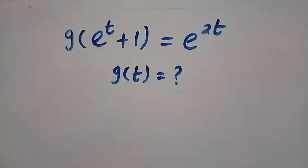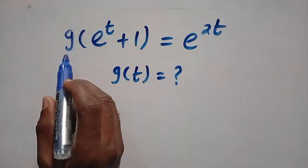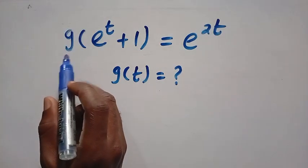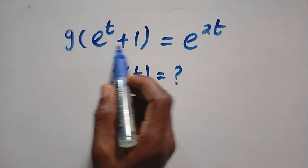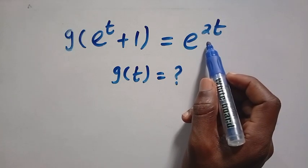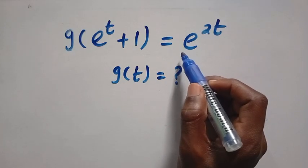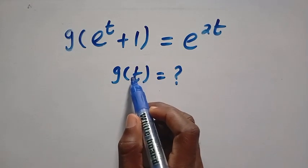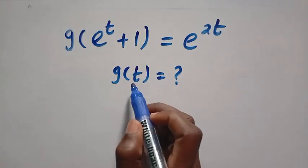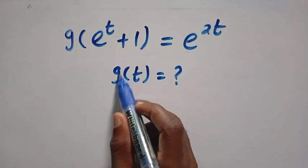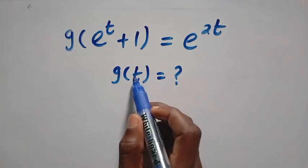We have the exponent as the domain of this function g. Given that g of e^t plus 1 equals e^(2t), and what is g of t? This contradicts because the one we are going to find does not have exponent.